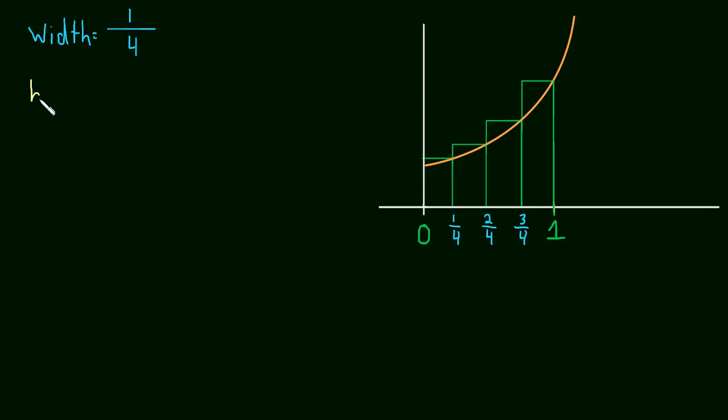And then the height of each rectangle, well that will be pretty easy. It will just be f of the x value, so f of one-fourth. That was probably a confusing way to say it, but let's take a look here. If we want the height of this rectangle, well it's the same as the height of the function when x is one-fourth, because the height of the rectangle shares the height of the function there.